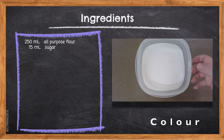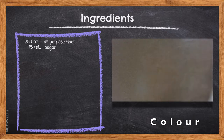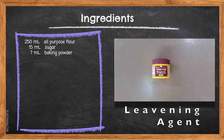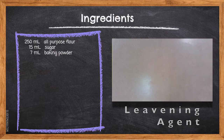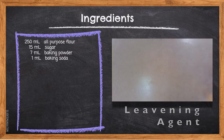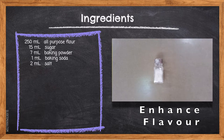7 milliliters baking powder — a leavening agent that when combined with a liquid will help produce the carbon dioxide gas needed to leaven our muffin. 1 milliliter baking soda — a leavening agent that when combined with an acid will create carbon dioxide gas. Today's muffin features yogurt, which is the acid that will activate the baking soda. 2 milliliters salt — salt enhances the natural flavors found within any baking product.